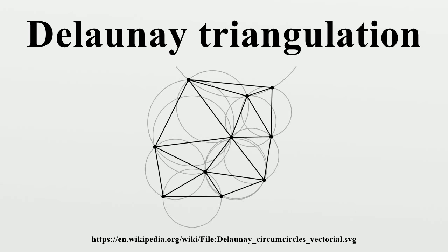The Euclidean minimum spanning tree of a set of points is a subset of the Delaunay triangulation of the same points, and this can be exploited to compute it efficiently. For modeling terrain or other objects given a set of sample points, the Delaunay triangulation gives a nice set of triangles to use as polygons in the model. In particular, the Delaunay triangulation avoids narrow triangles — see triangulated irregular network.